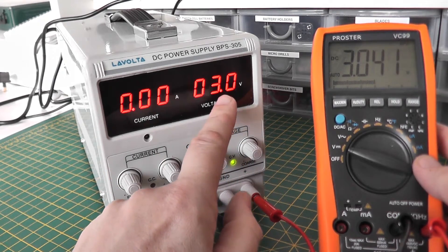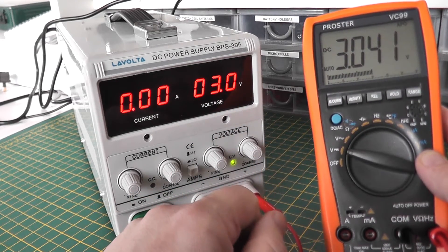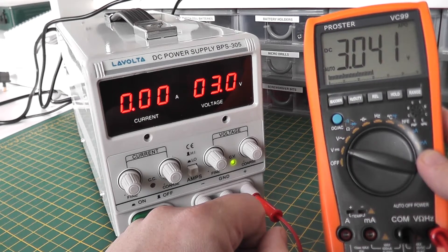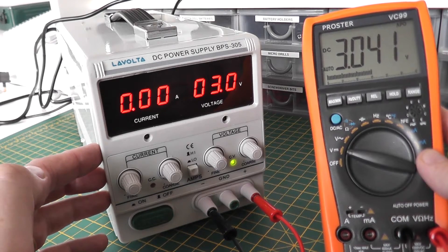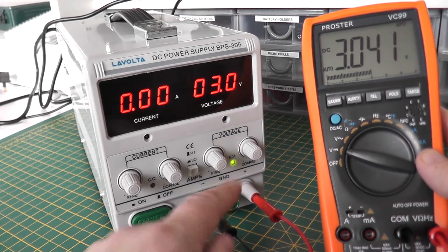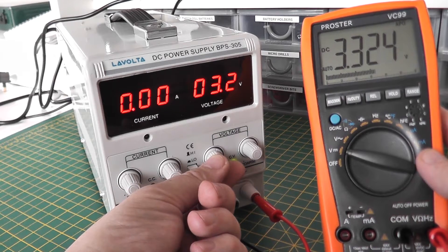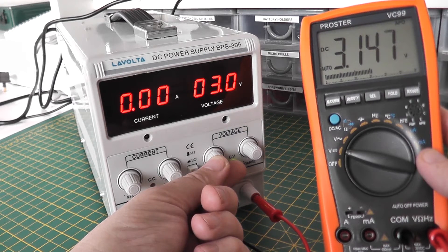So once we've got three volts on the supply, as you can see we've got 3.041 volts on the meter, which I think is pretty good for a budget entry level power supply like this. You do have to tweak the fine control to get it to exactly where you want it, but like I say for a low-end model that's not a big hardship is it.